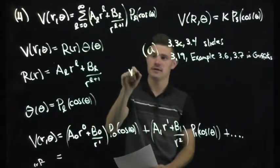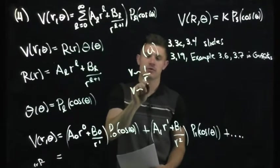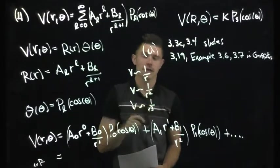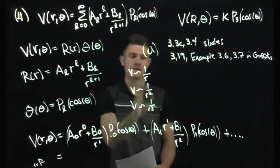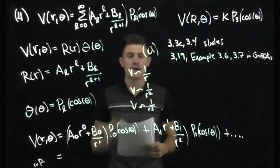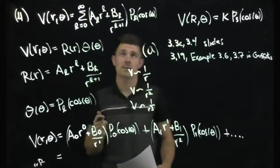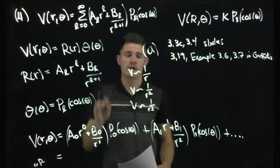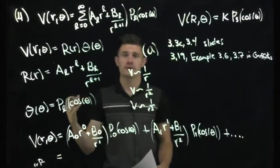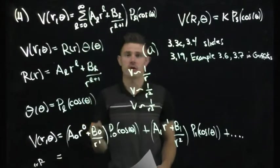From the multipole expansion: if V is proportional to 1/r, that's a monopole; if V is proportional to 1/r², that's a dipole; if proportional to 1/r³, that's a quadrupole; and so on through octopole, etc. We're increasing in powers of r in the denominator, which comes from the B_L / r^(L+1) term in the sum. When L=0 we get 1/r; when L=1 we get 1/r². So the value of L determines whether it's a monopole, dipole, quadrupole, or octopole.